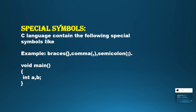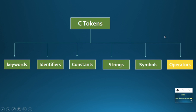Coming to the next token: special symbols. We have some special symbols in C language, for example braces, comma, and semicolon. In a program, 'void main()' uses brackets; the program body starts and ends with flower brackets. Two variables are separated by comma, and semicolon is used to end a C statement.